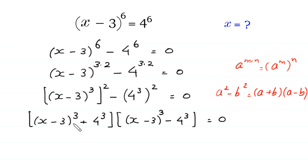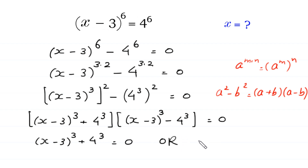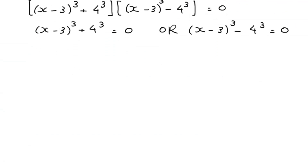Now from here, either the expression (x minus 3)³ plus 4³ is equal to 0, or the expression (x minus 3)³ minus 4³ is equal to 0. So we have two cases here — this is Case 1 and this is Case 2.